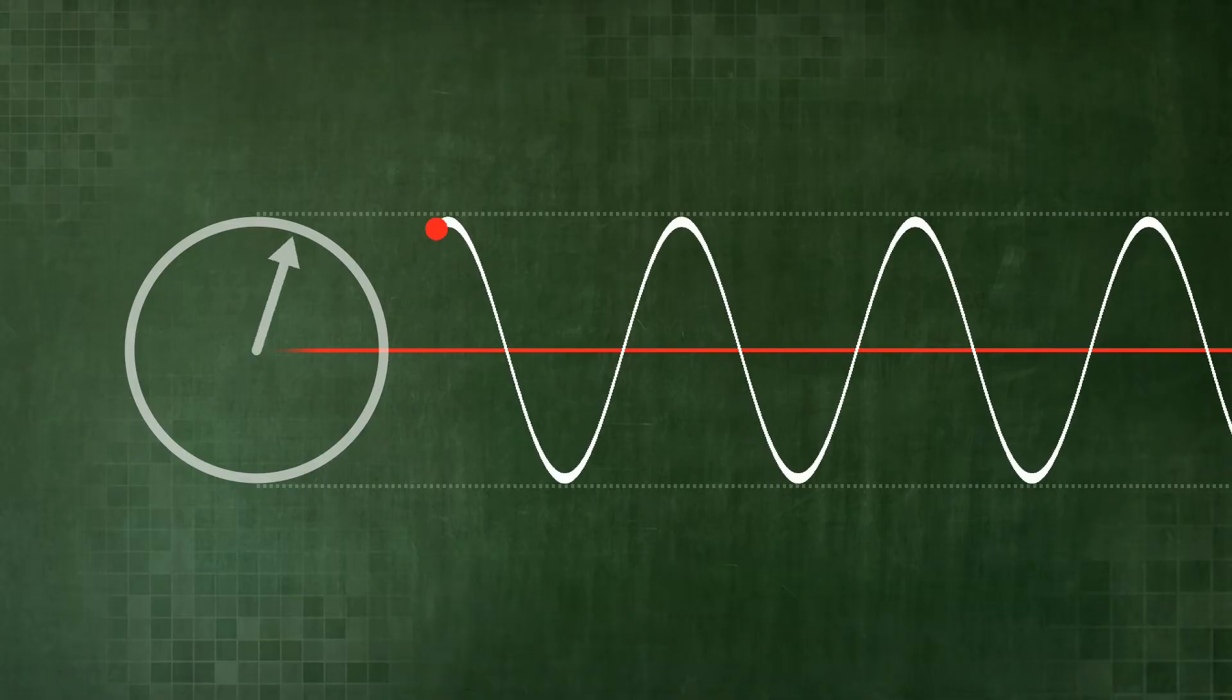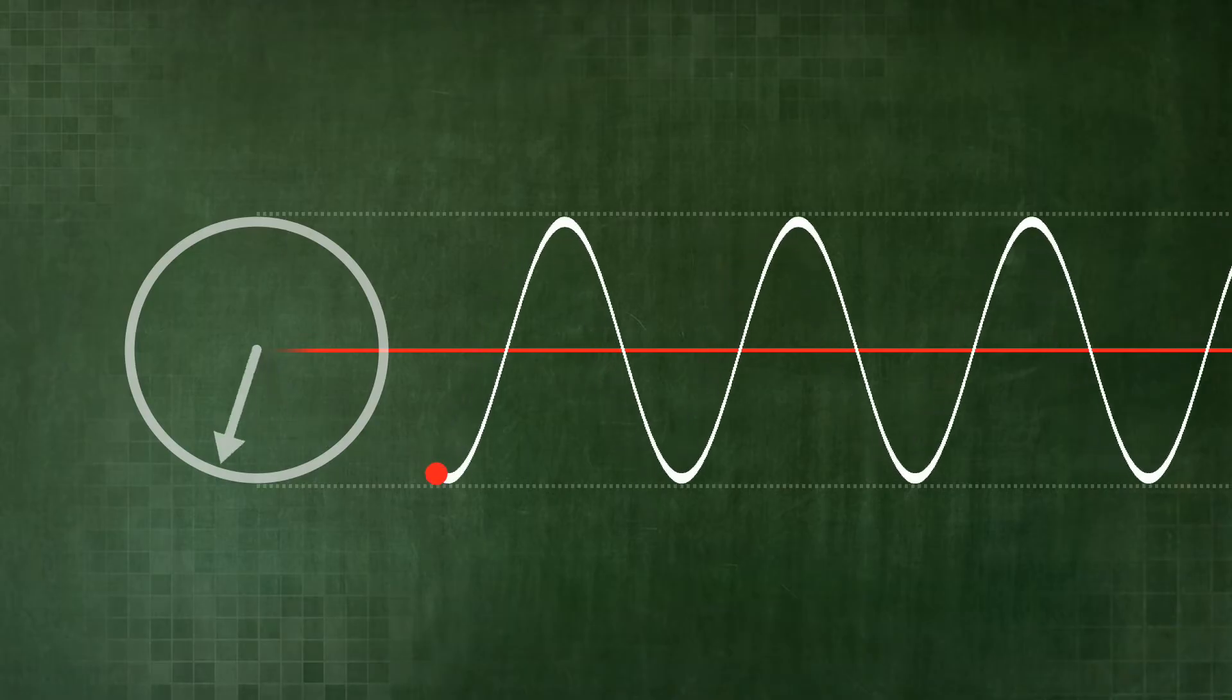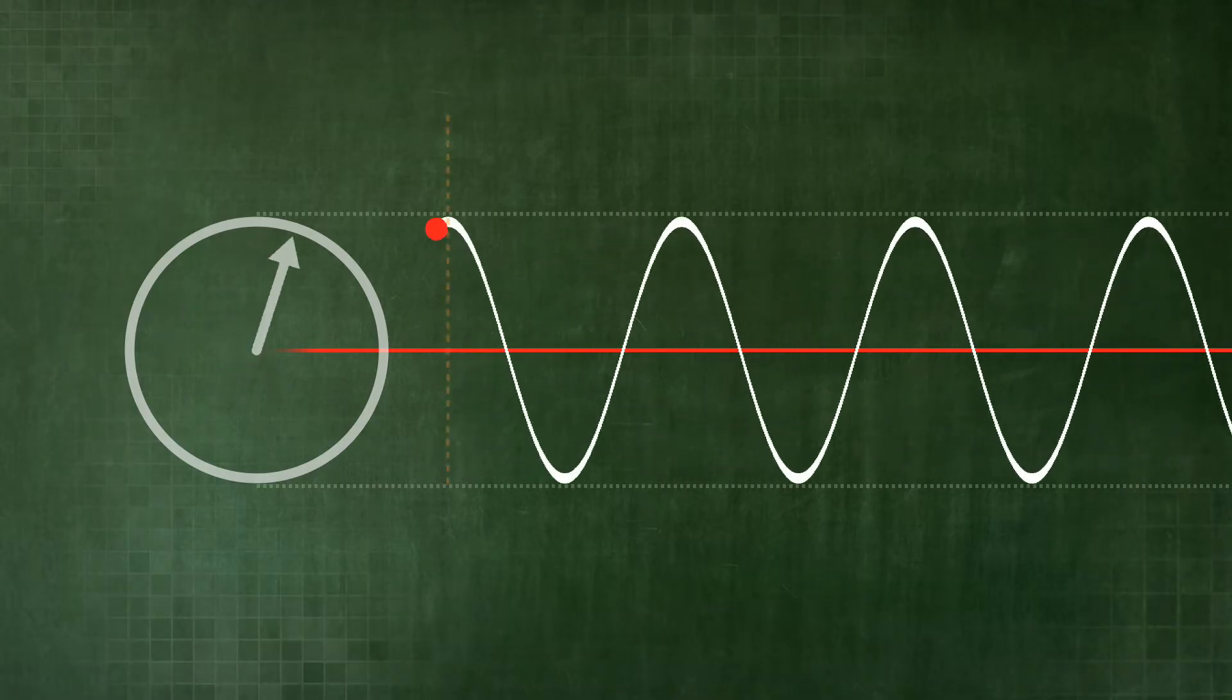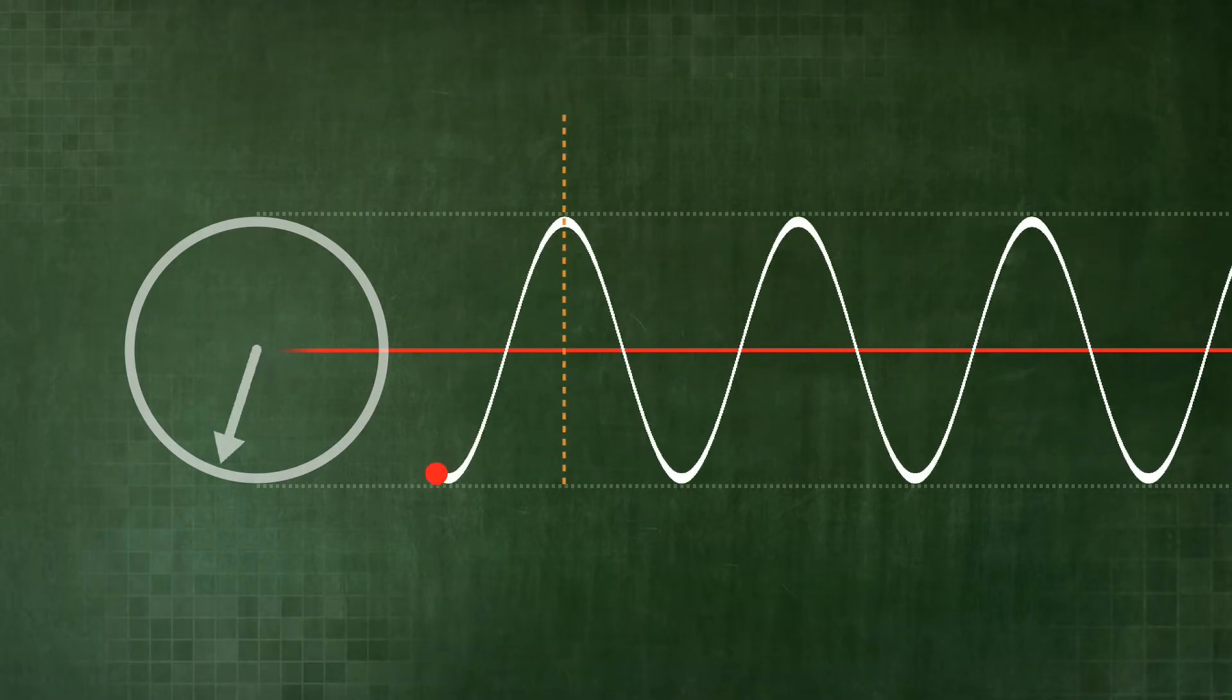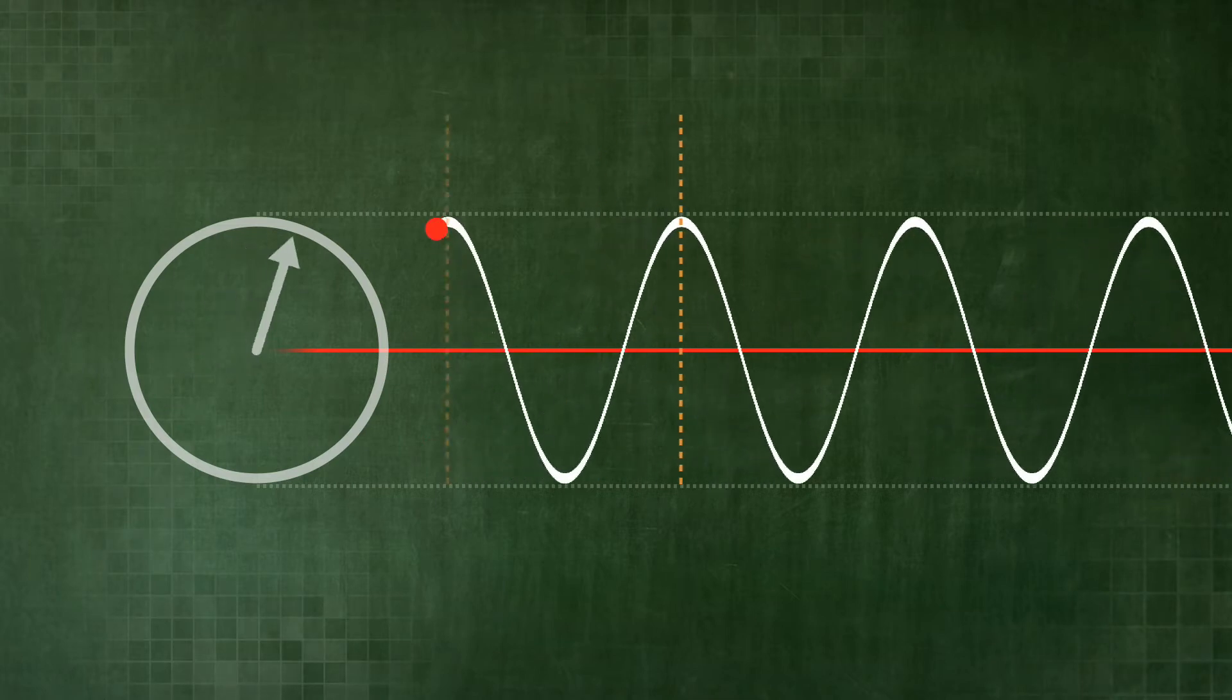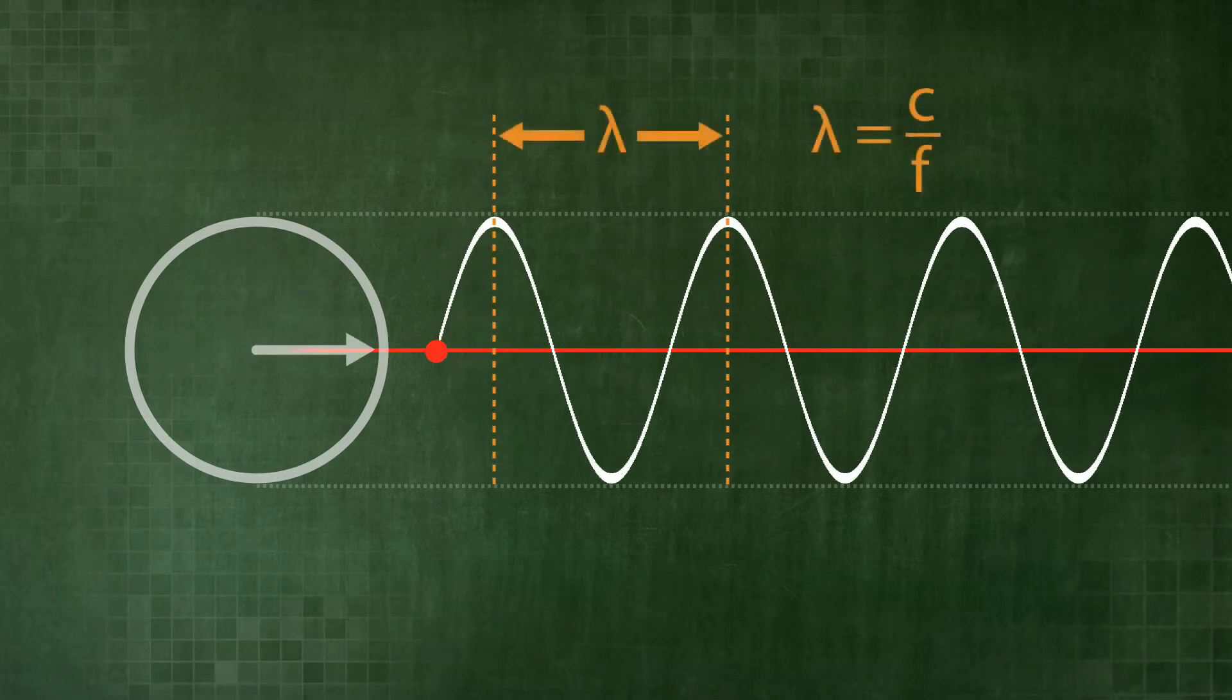The number of circular revolutions per second represents the frequency of the sound wave. The radius corresponds to the amplitude of the sound wave. The wavelength lambda is calculated from the ratio of the wave propagation rate c and the frequency f.